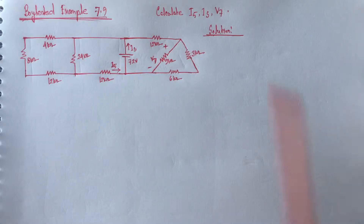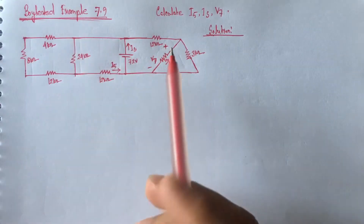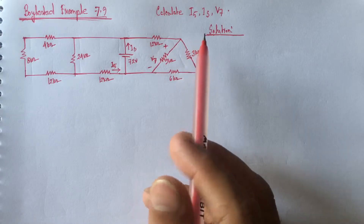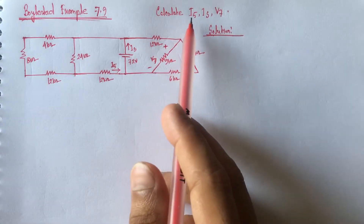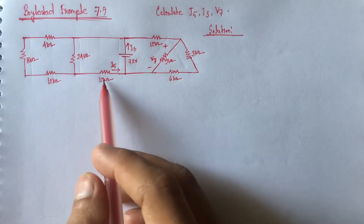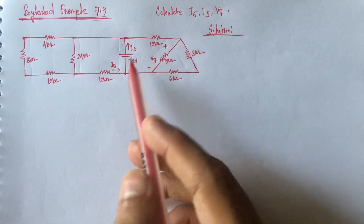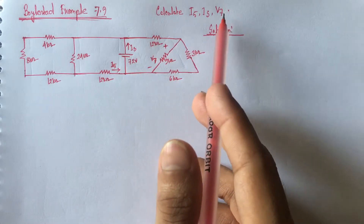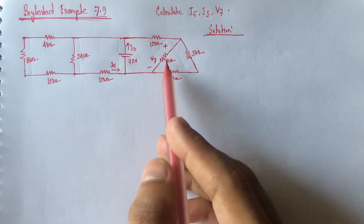Hi viewers, today we will solve example 7.9 from Boyle Street. This is a series-parallel circuit related problem. Here we have to identify the current I5 which is flowing through the 12 Kiloohm resistance, current IS which is flowing through the 72 volt source, and voltage V7 which is across the 9 Kiloohm resistance.